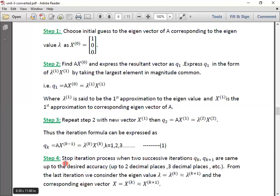Since it is an iteration process, we need to stop this iteration process when two successive approximations or iterations Qₖ and Qₖ₊₁ are same up to the desired accuracy. That means the accuracy may be up to 2 decimal places, 3 decimal places, etc. And from the last iteration, we consider eigenvalue and eigenvector from RHS part of equation 1. When it is shown that lambda is taken as lambdaₖ which is approximately close to lambdaₖ₊₁, Kth approximation is very close to K plus 1 approximation. So lambda should be taken as lambdaₖ₊₁ because it is the latest iteration.